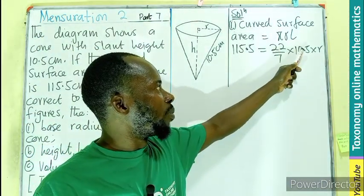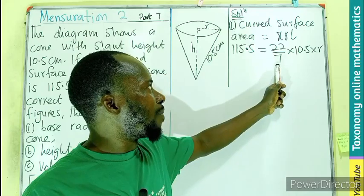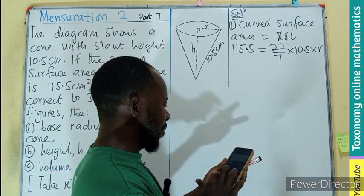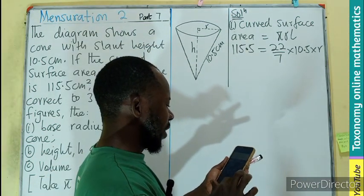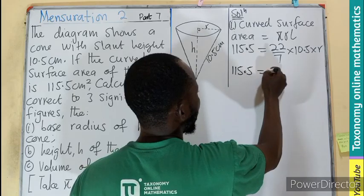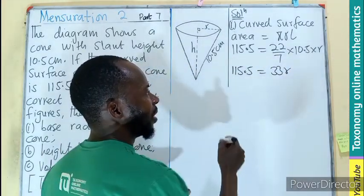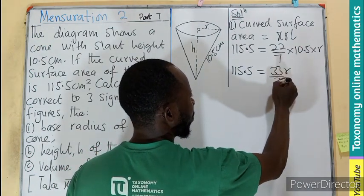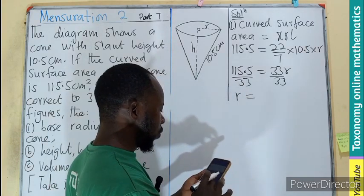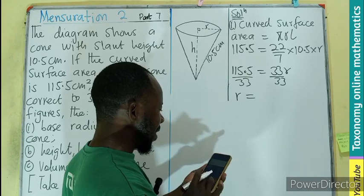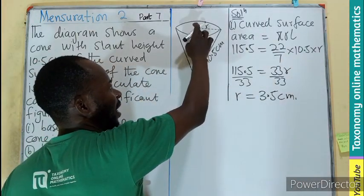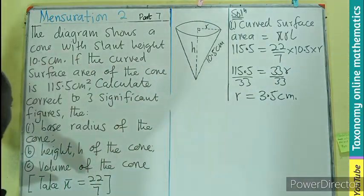That simply means that we are multiplying 10.5 by 22 divided by 7, then we cross multiply with the 7. So 22 times 10.5 divided by 7, that will give you 33. So 115.5 equals 33R. And you are aware that we divide by the R coefficient, so R is going to be equal to 115.5 divided by 33, and that will give us 3.5 cm.